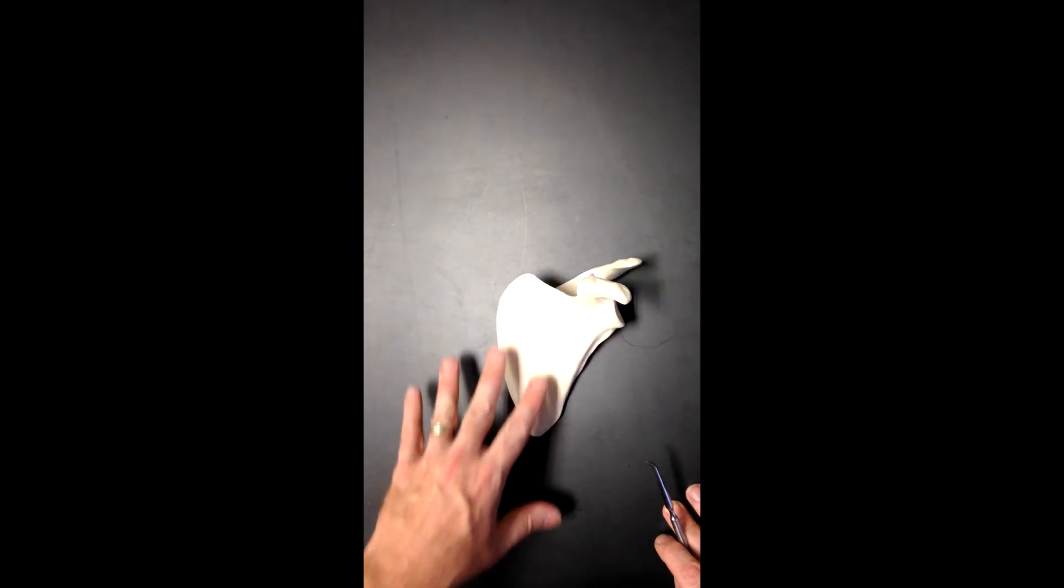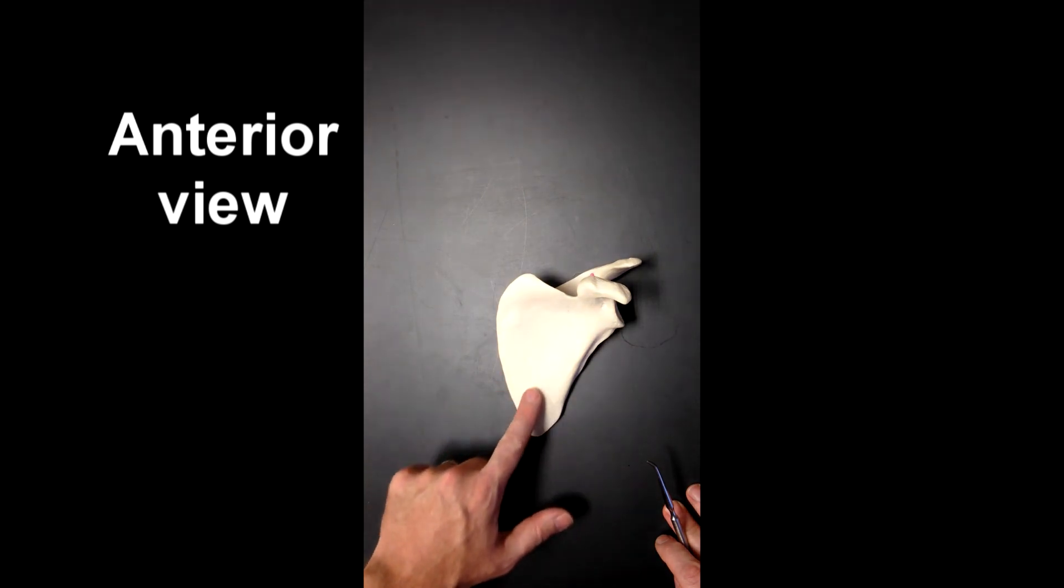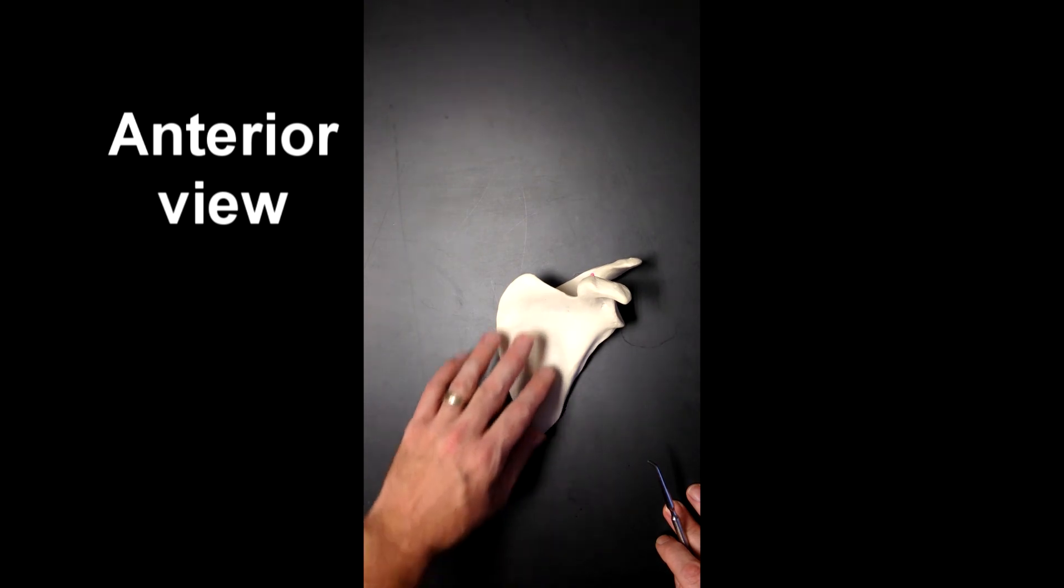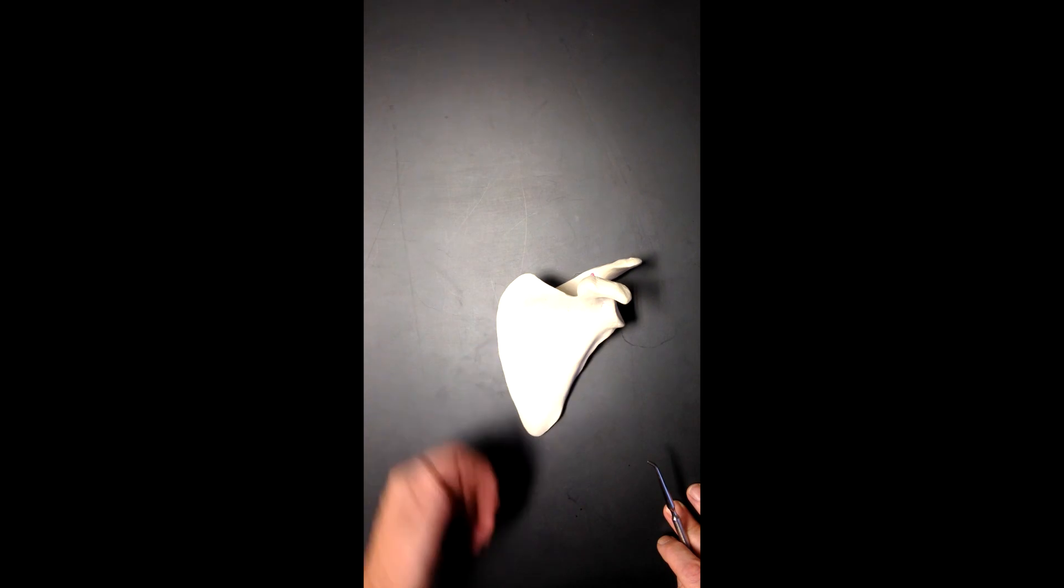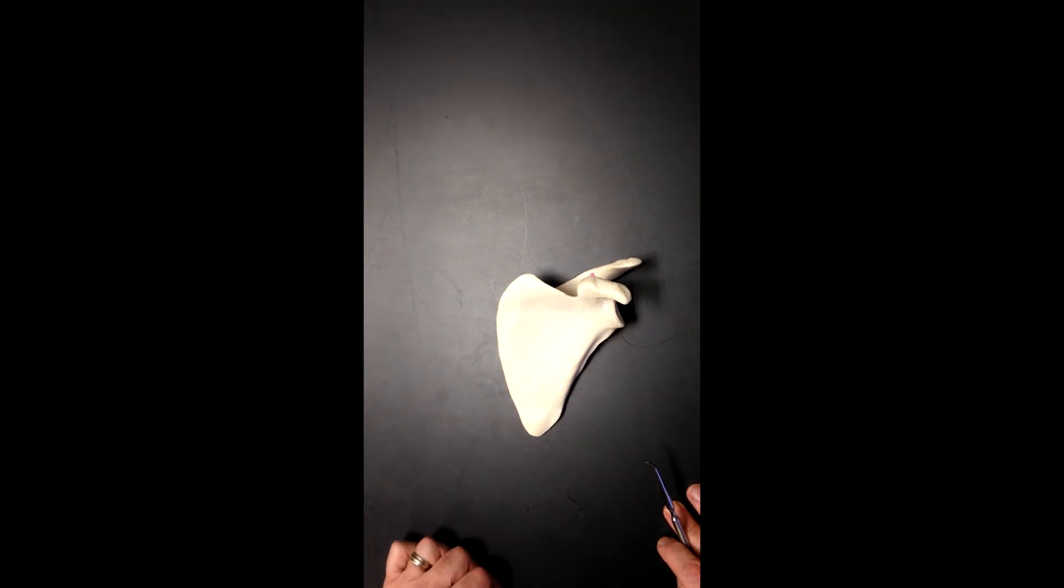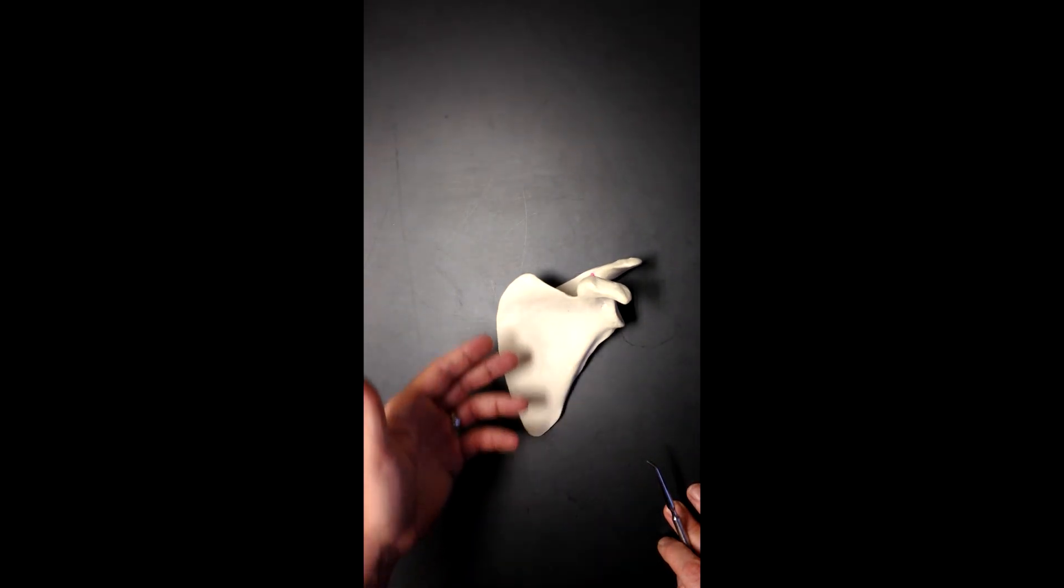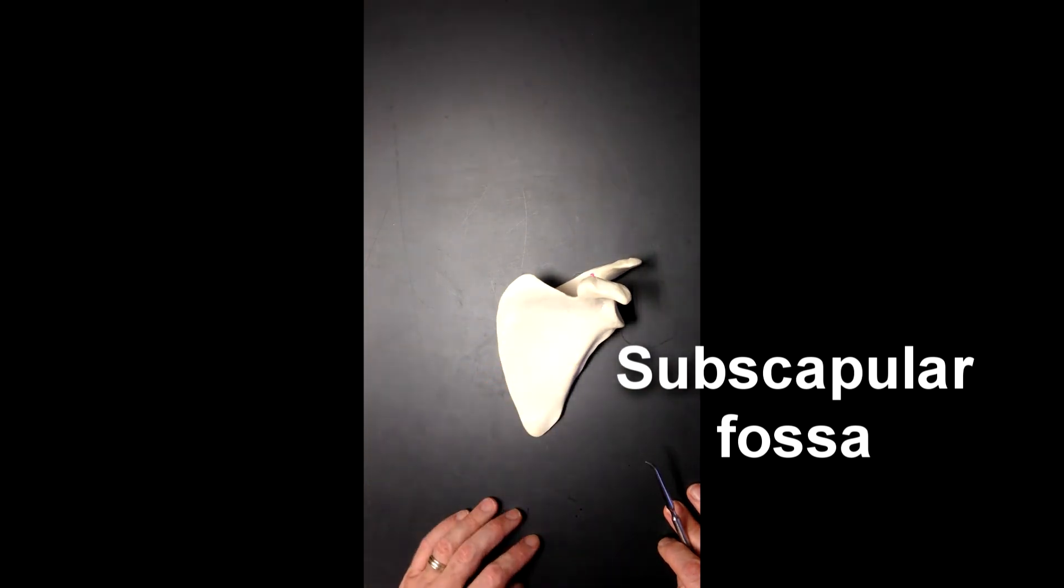Now that we're looking at the anterior view of the scapula, we can see this nice, smooth articular surface here. This is, in a skeleton, this would articulate with the ribcage. However, in real life, there would be a couple of muscles between the scapula and the ribcage. One muscle being the serratus anterior, and another muscle would be the subscapularis muscle. That subscapularis muscle is named for this area right here, which is called the subscapular fossa.